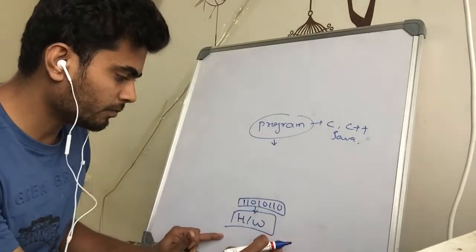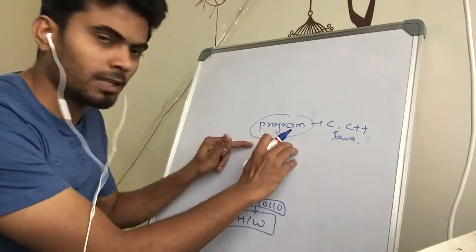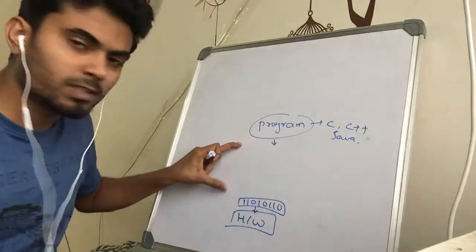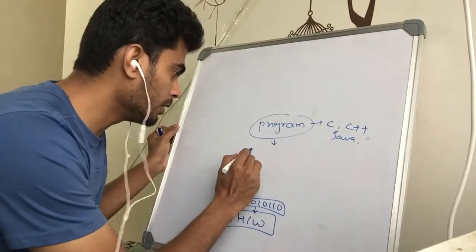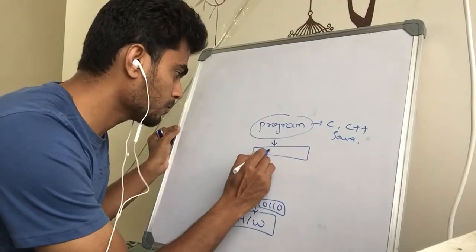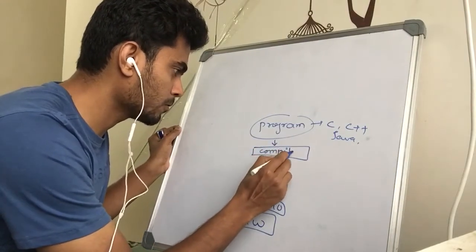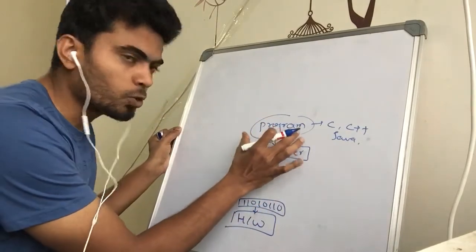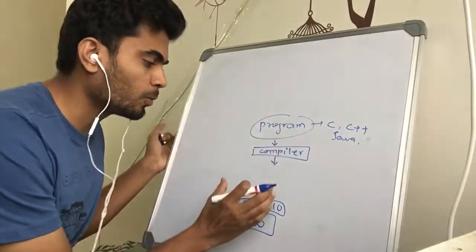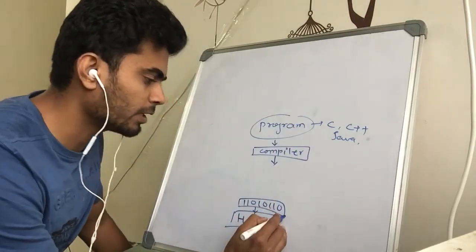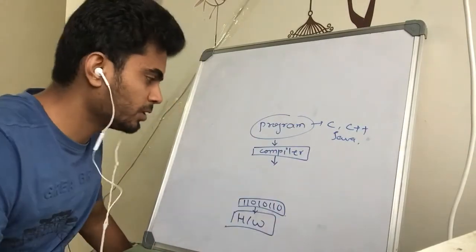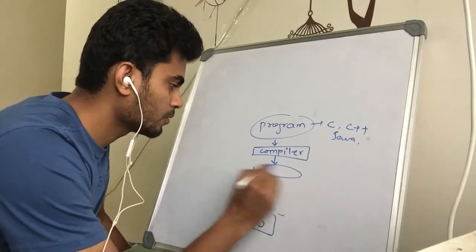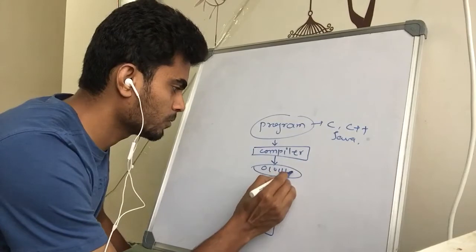You need some kind of converter, and that converter is called a compiler. The compiler converts your program — called the source file — into an object file, which is the binary or executable file.